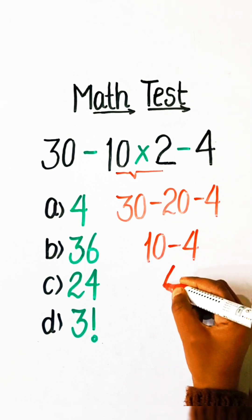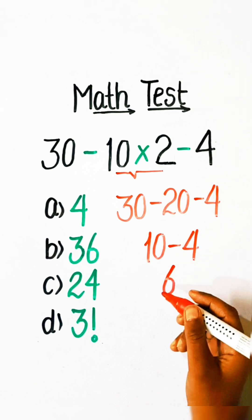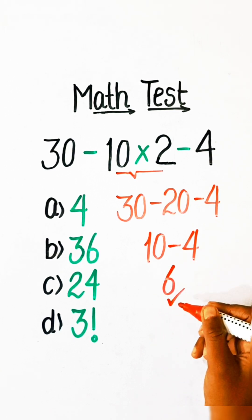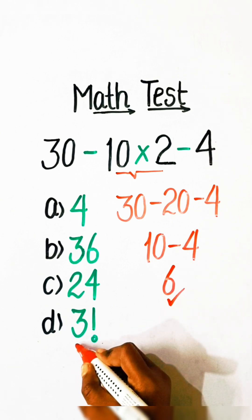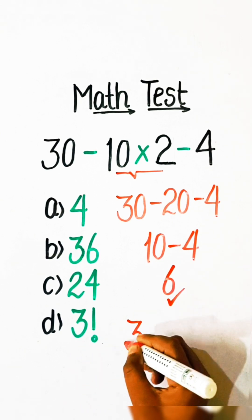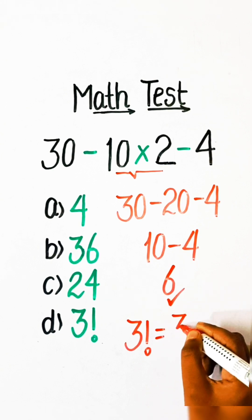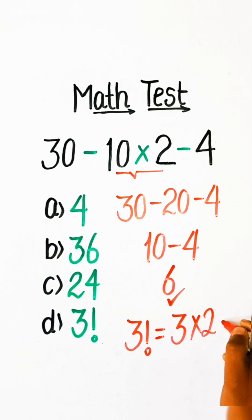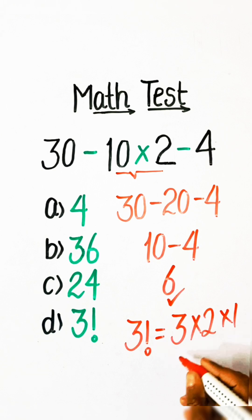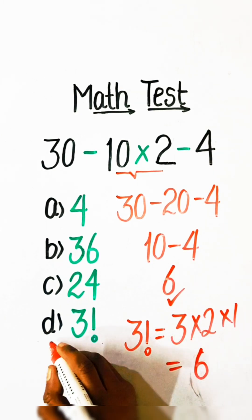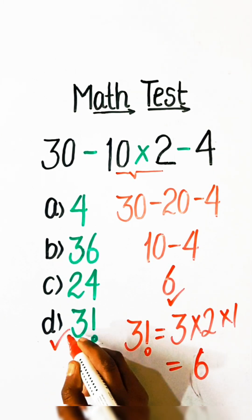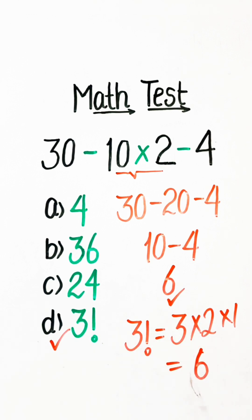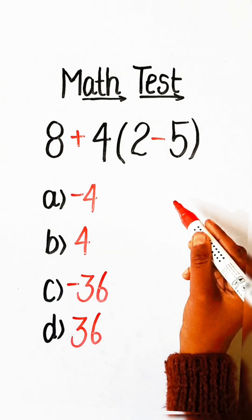30 minus 20 is 10, minus 4 is 6. So 6 will be our correct answer. The value of 3 factorial is 3 multiply by 2 multiply by 1, which equals 6. If you like my video, please like, share and subscribe to the channel.